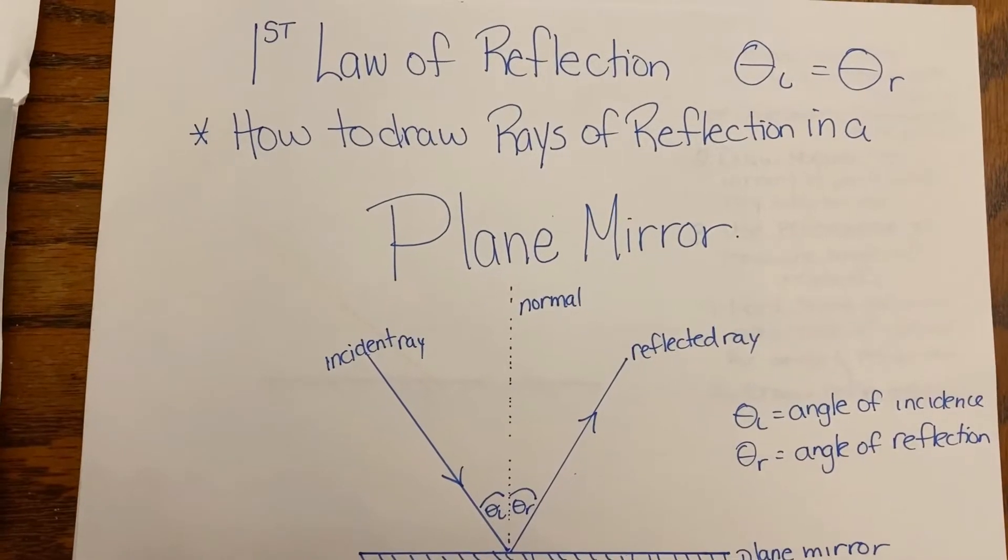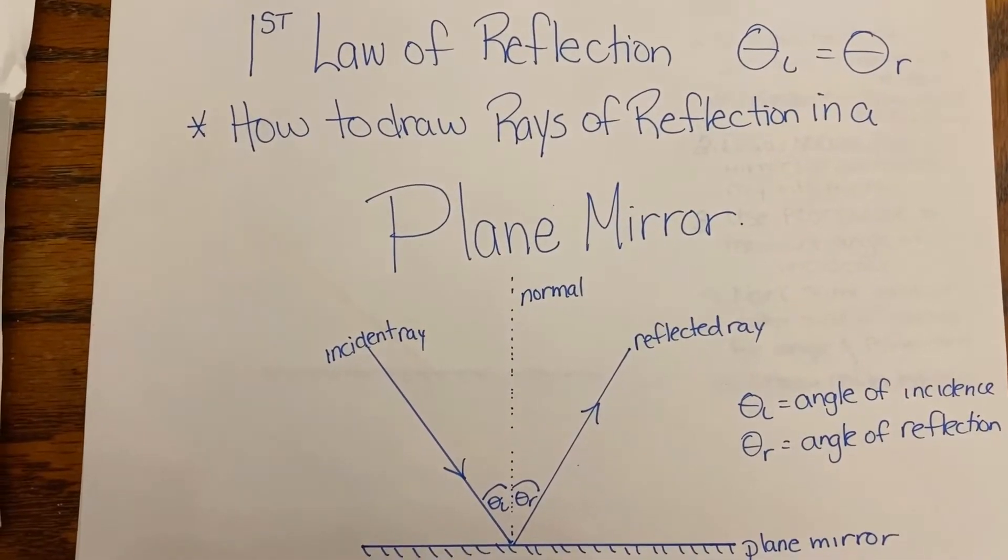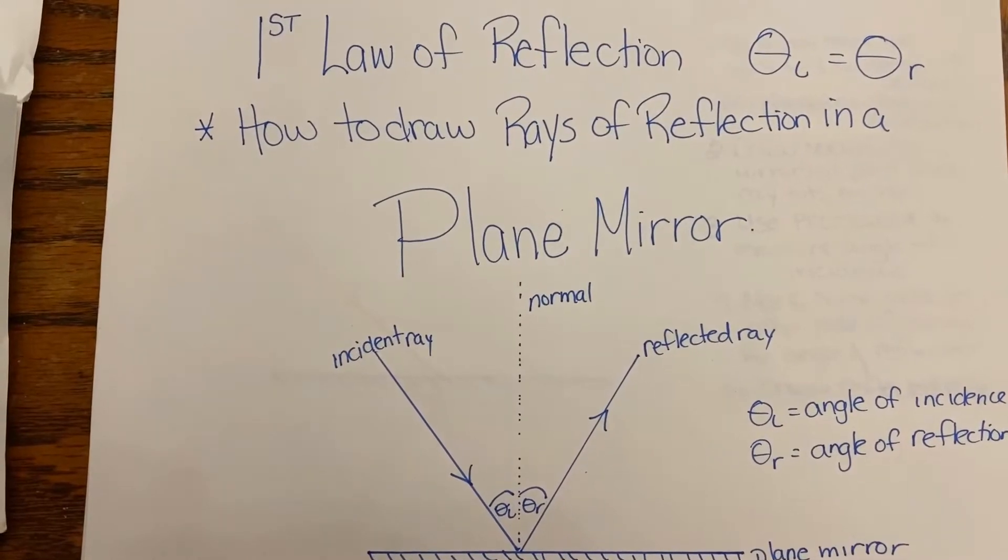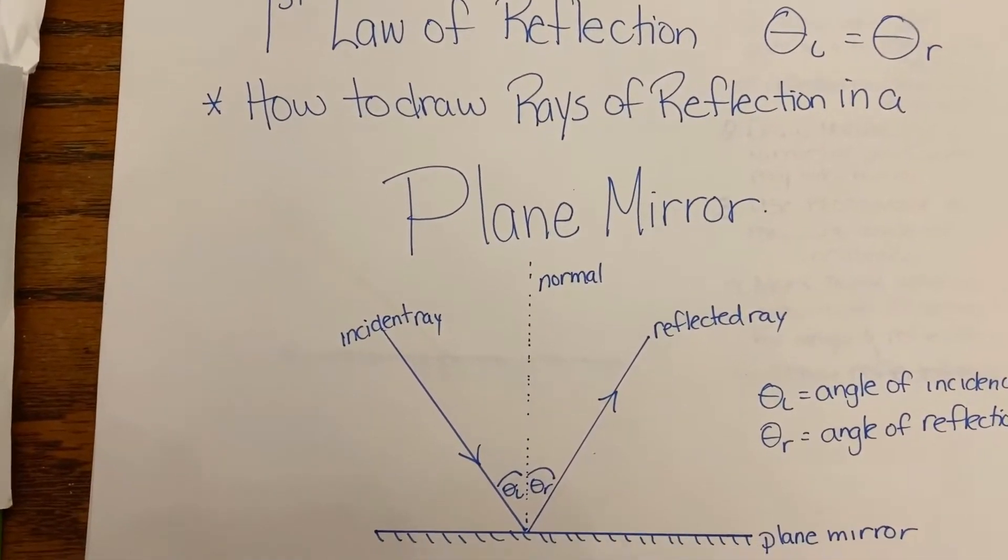Today we're going to learn about the first law of reflection, which states that the angle of incidence equals the angle of reflection. We're also going to learn how to draw rays of reflection in a plane mirror.